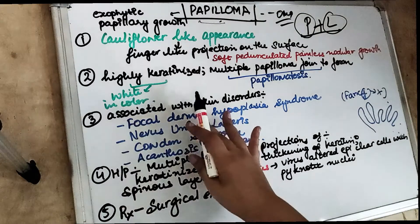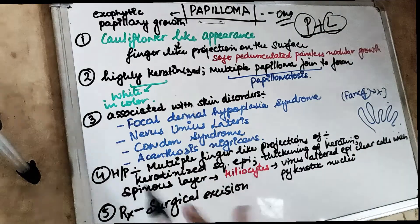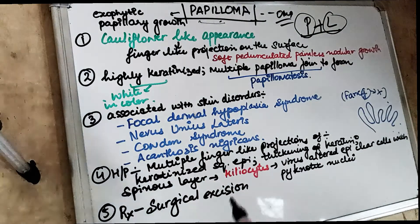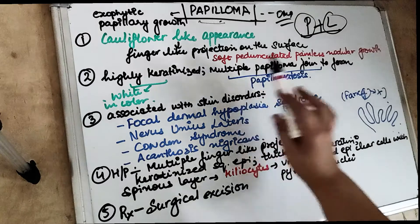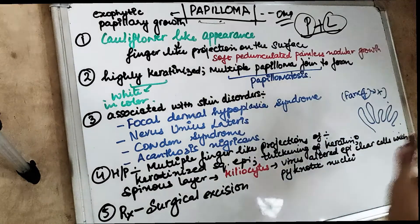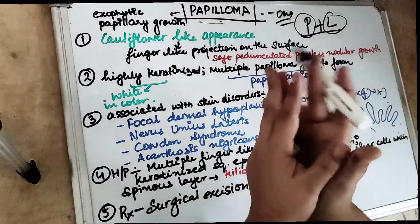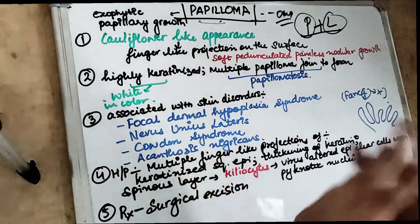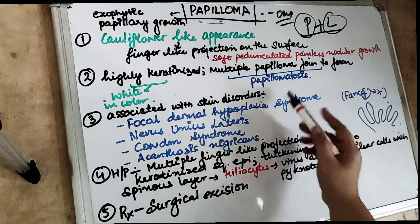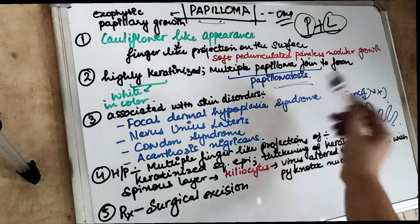Papilloma is highly keratinized, which is why it is white in color — keratinized tissue appears white. When multiple papillomas join together to form a large growth, we call it papillomatosis.